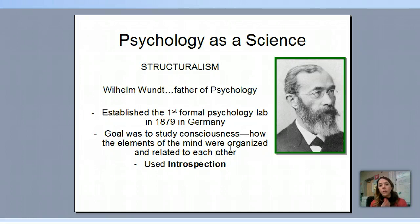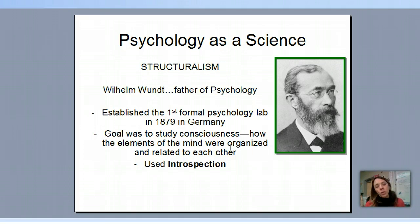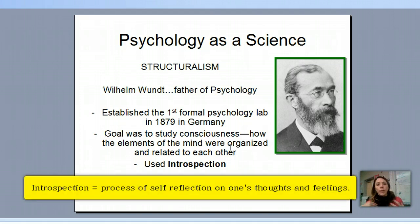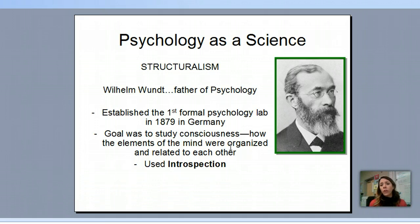Wundt used a technique called introspection. We'll talk about introspection more with Freud, but it involved looking into the mind and doing free association — asking what is the first thing that comes to your mind when you move your arm, and looking more into people's thoughts and how they're connected to the body. He is considered the father of psychology.